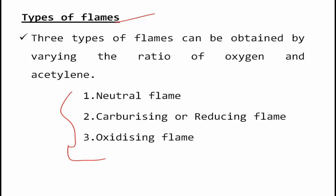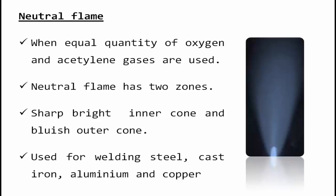Generally, three types of flames are produced during the process. Based on how much proportion or percentage of gas is used, we get a neutral flame, a carburizing or reducing flame, or an oxidizing flame.